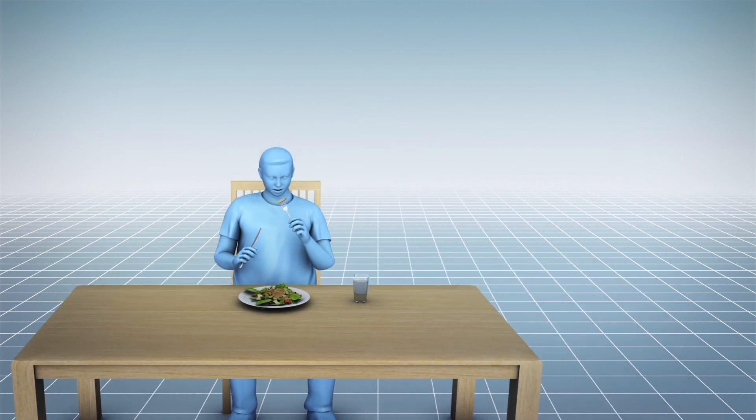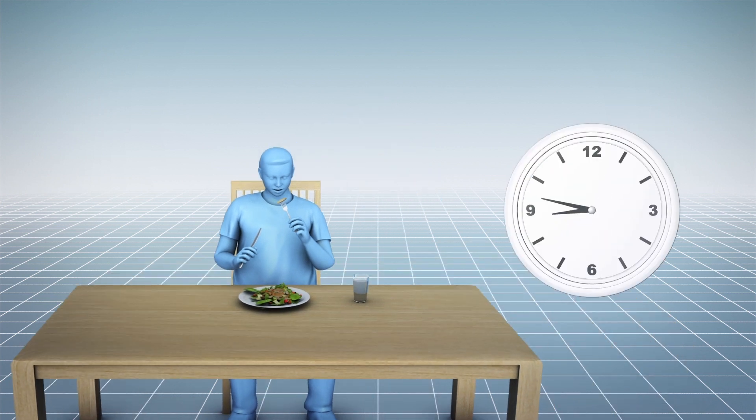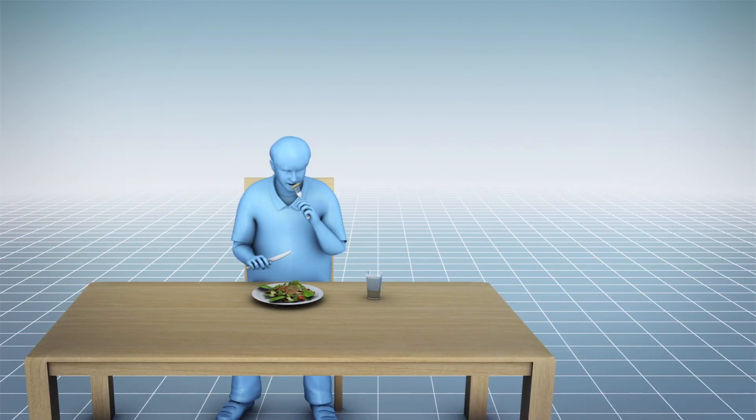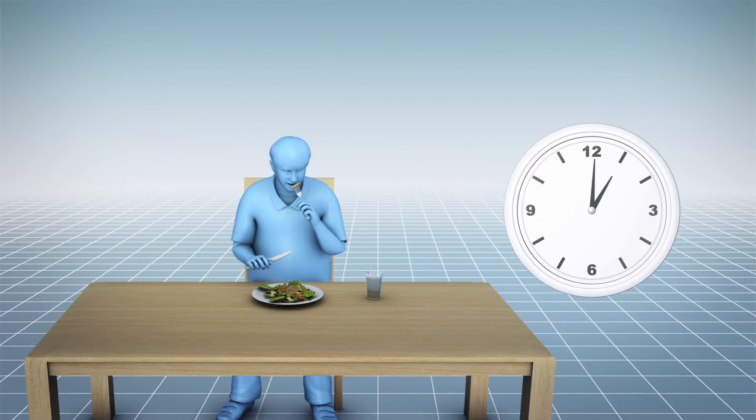One group of participants ate over a six-hour period between 8 a.m. to 2 p.m. The second group ate over a 12-hour period between 8 a.m. and 8 p.m. Those taking part were told to eat the same number of calories every day.